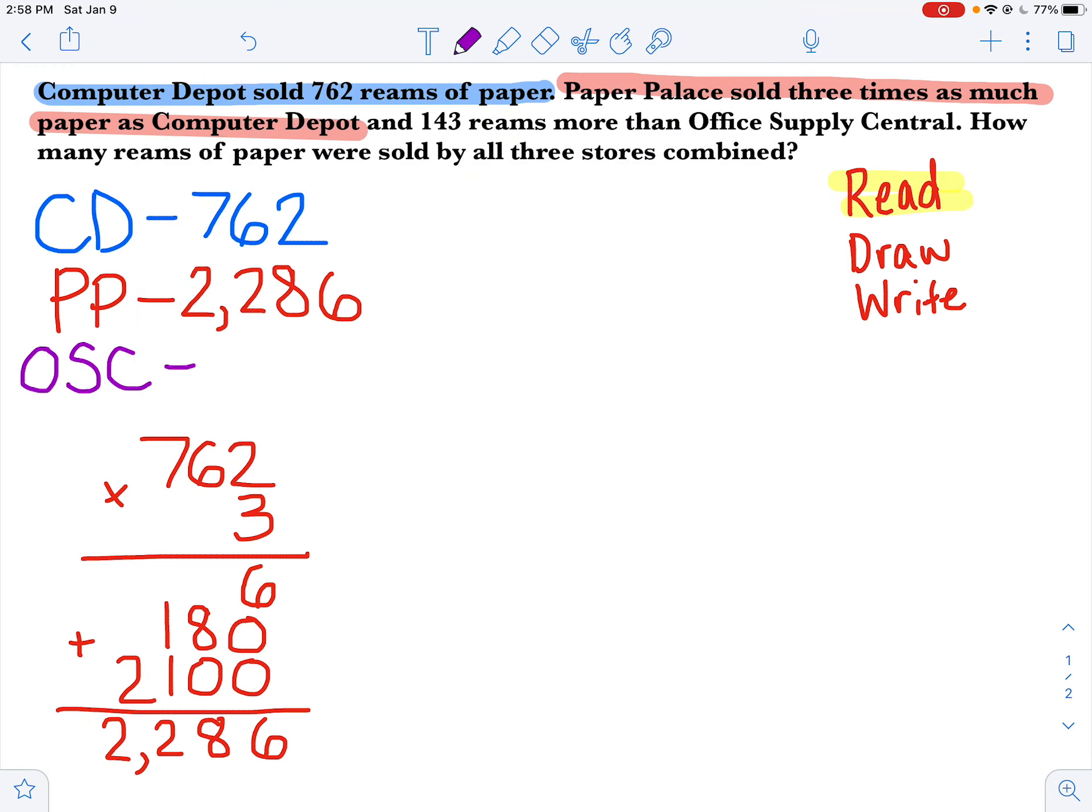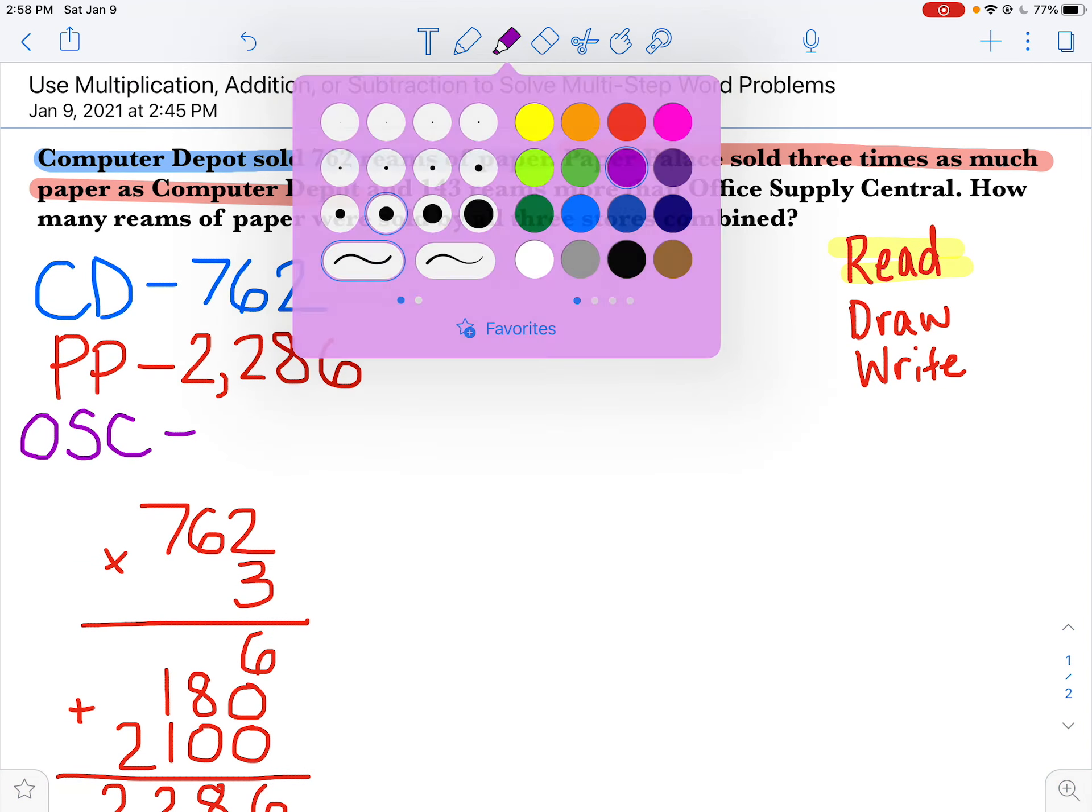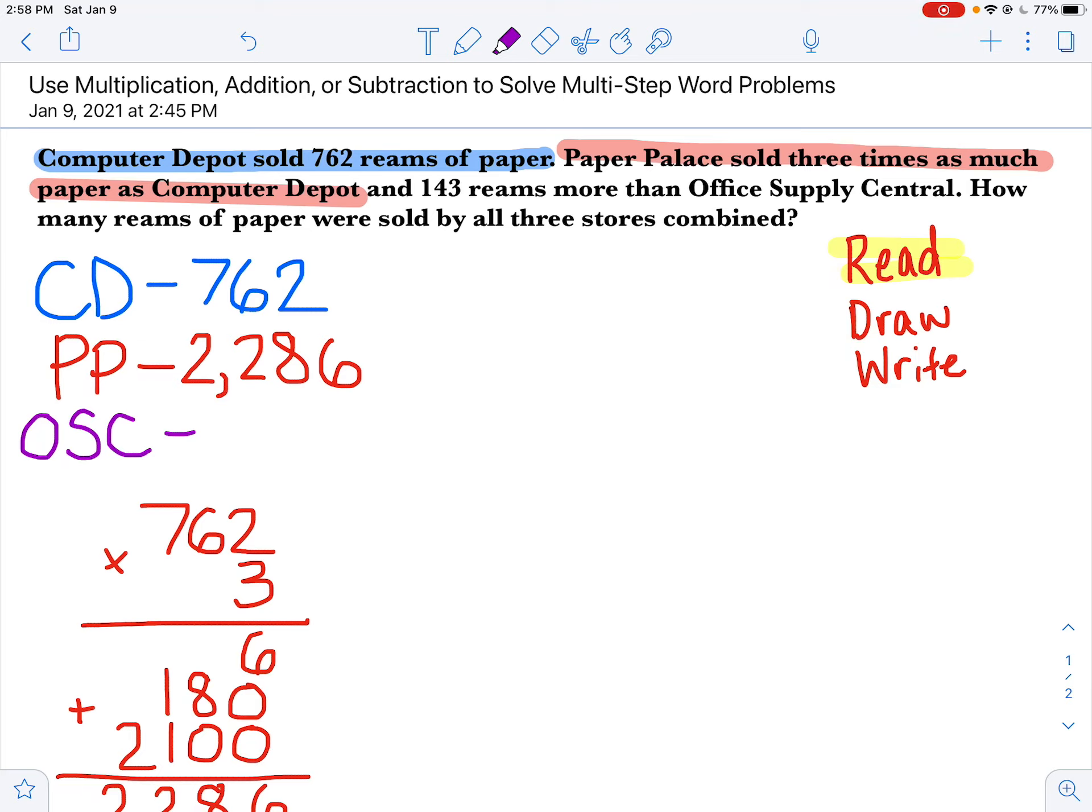Now to figure out the Office Supply Central. Let's take a look. I'm going to go back and reread the Paper Palace sentence. Paper Palace sold three times as much paper as Computer Depot and 143 reams more than Office Supply Central. So Paper Palace sold more than Office Supply Central. So I'm going to have to take Paper Palace's amount, 2,286, and I'm going to have to subtract from that to find out how many reams Office Supply Central sold. I know that I have to subtract 143 because Paper Palace sold 143 more than Office Supply. So if Paper Palace sold 2,286, I will subtract 143 from that to figure out how many reams Office Supply Central sold.